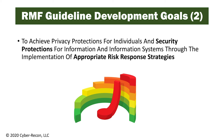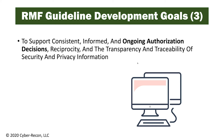The RMF supports consistent, informed, and ongoing authorization decisions, reciprocity, and transparency and traceability of security and privacy information. This gives senior leadership, including the authorizing official, the ability to see what risks are levied against information systems at almost any point in a system's lifecycle. It provides traceability back to the security and privacy controls that are protecting information and information systems, allowing leadership to make informed and consistent decisions when determining if information systems should be authorized or continue to operate within the organization.